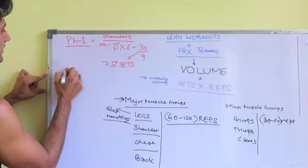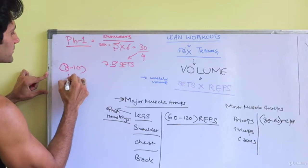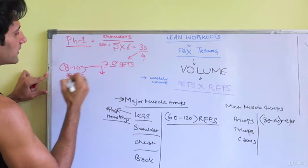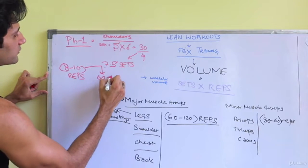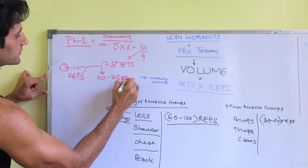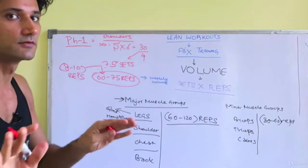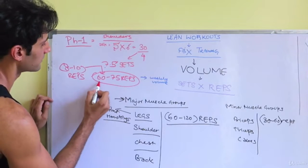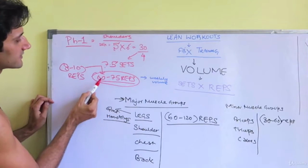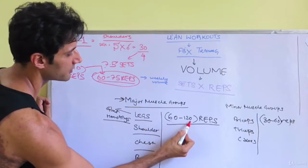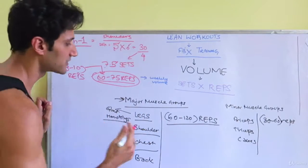That is 30 divided by each week, that is 7.5 sets. In phase one we are doing FPX cut. FPX cut has eight to ten repetitions for each set. In total, this is around 60 to 75 repetitions. If you didn't get this, don't worry about it.